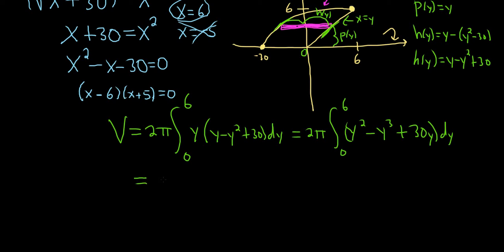Let's go ahead and integrate. I'll leave the 2 pi on the outside, so 2 pi bracket. We can use the power rule, so it'll be y cubed over 3 minus, this next one will be y to the 4 over 4. And then integrating 30y is going to give us 30y squared over 2. So that's really 15y squared, okay? So 15y squared because 30 over 2 is 15. And we're going from 0 to 6.